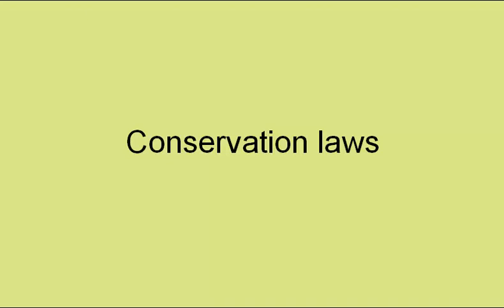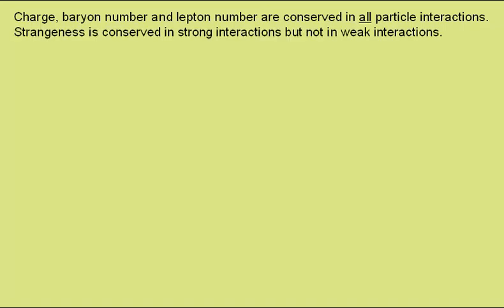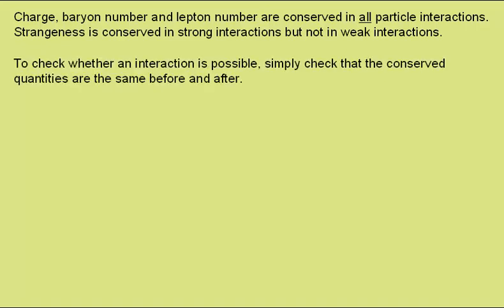Conservation laws: charge, baryon number, and lepton number are conserved in all particle interactions, whereas strangeness is conserved in strong interactions but not in weak interactions. To check whether an interaction is possible, simply check that the conserved quantities are the same before and after the interaction.